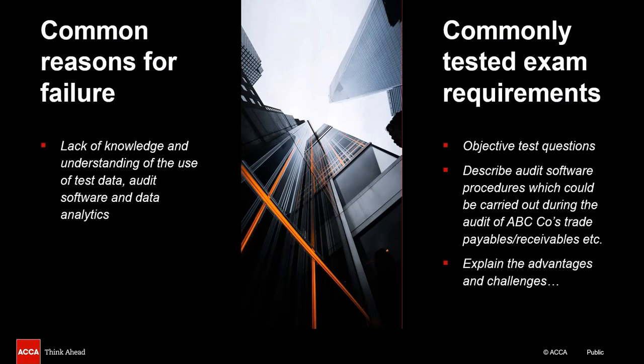This topic is tested in section A as objective test questions as well as section B, often in combination with substantive procedures. You may also be expected to use these in your answers on questions on internal control. For example, when you're doing a question on deficiency or test of control, if there's a part of the system which is automated, it can actually be tested through test data. So with substantive procedures, internal controls or knowledge-based questions, this could be tested in various areas in section A and section B.